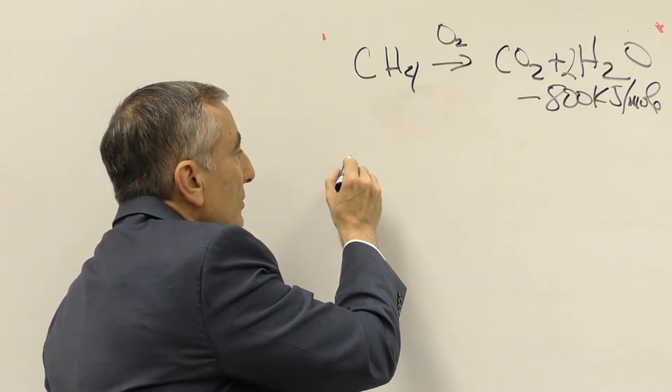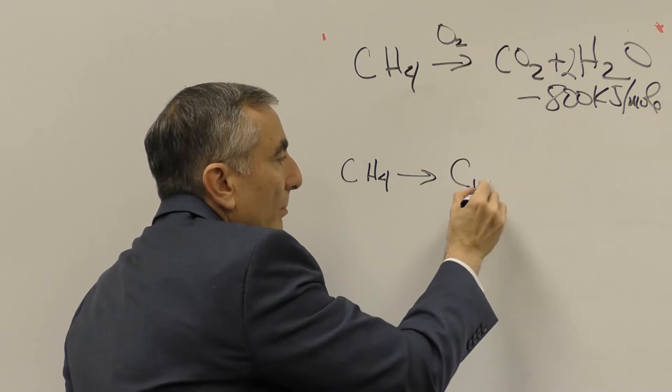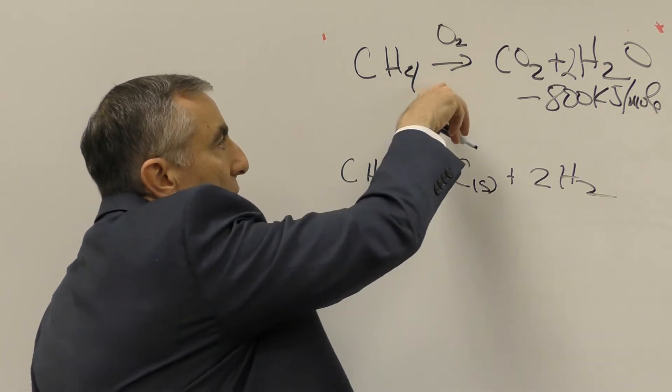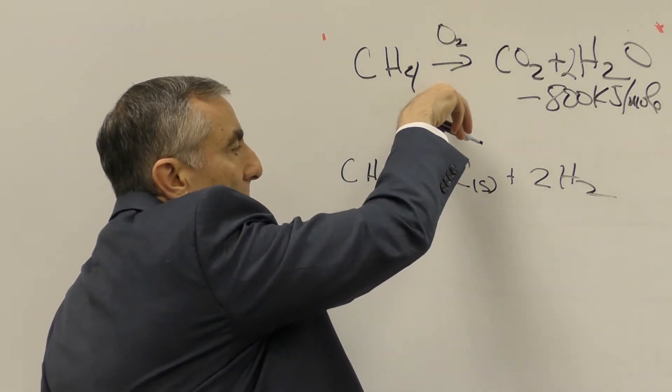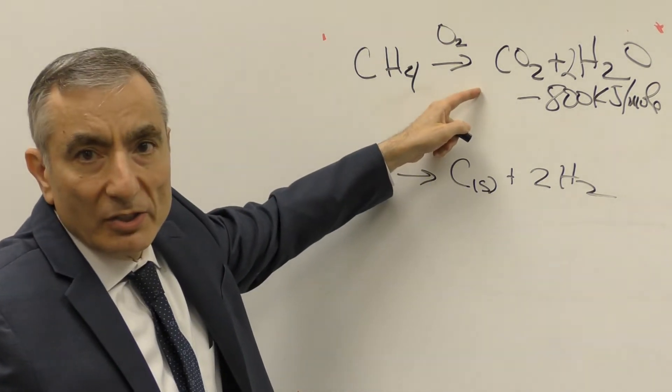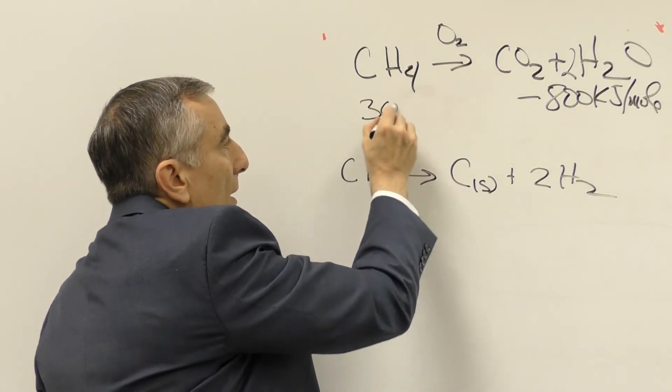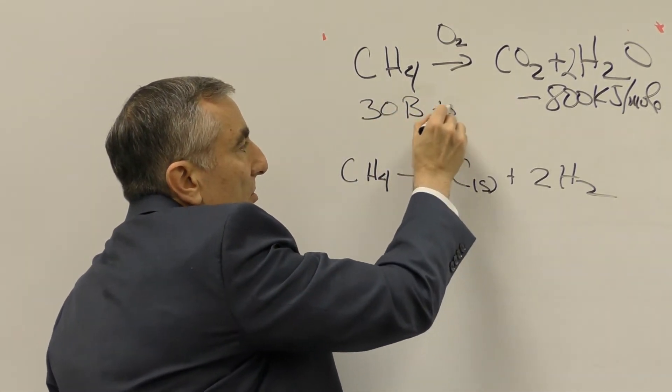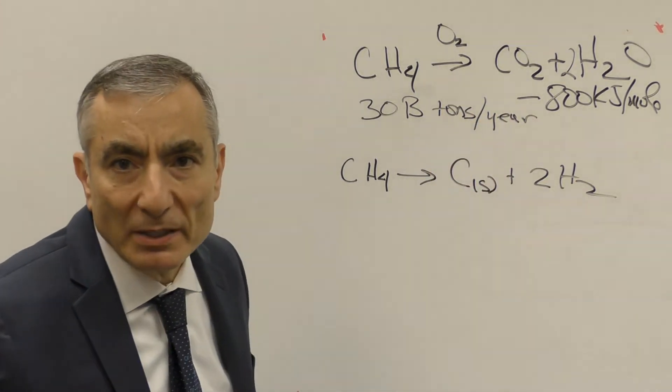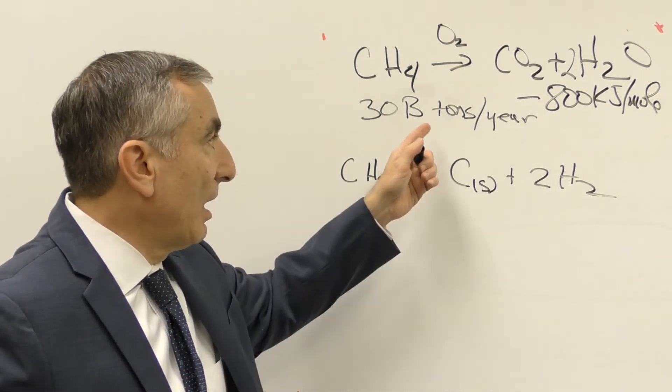Another way that you could do this is you could take methane and you could convert it to a carbon solid plus two molecules of hydrogen. This is normal combustion. This is not. Normal combustion does this. In doing this, normal combustion will be blowing out 30 billion tons of CO2 per year into the atmosphere. That's a lot of CO2.